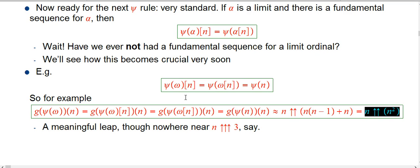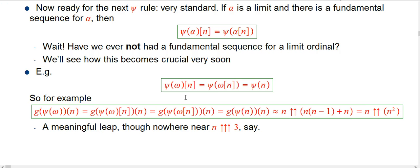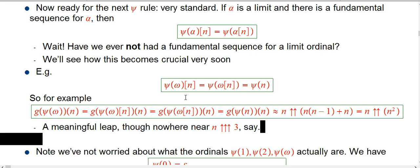That approximation happens to be exactly n double-up n squared. It's often helpful to write it this way because that was the starting point, and this tells us how many n-minus-ones we added. I would call it a meaningful leap from n double-up n — what we had with epsilon naught — to n double-up n squared. Even though n squared is not our idea of a fast-growing function, we are putting it into the more powerful slot in the double-up. It's bigger than n double-up n and then double-up that by n, which only gives you like 2n minus 1 in the powerful slot. So it's a meaningful leap — not getting to n triple-up 3, which we'll get to, but not there yet.